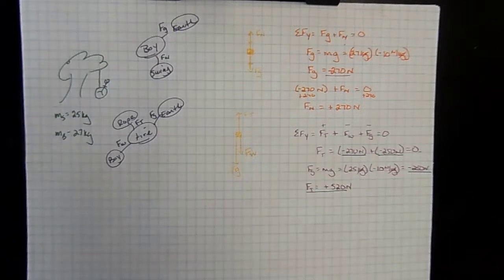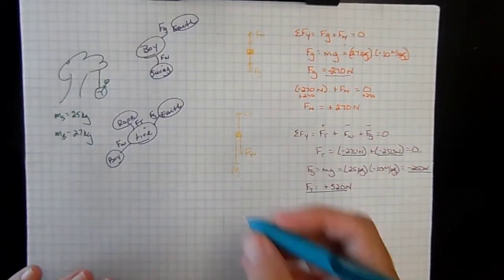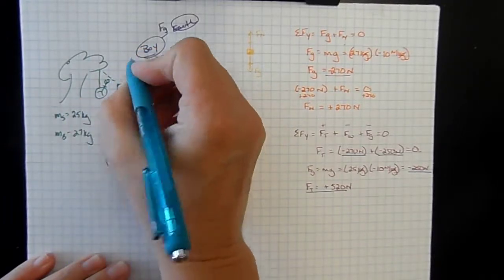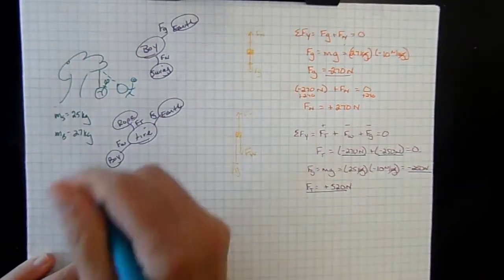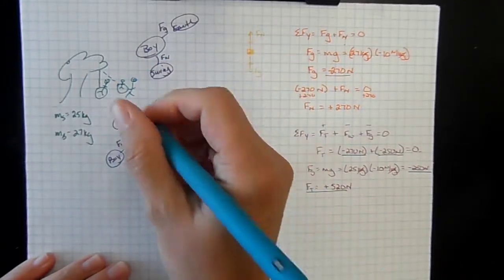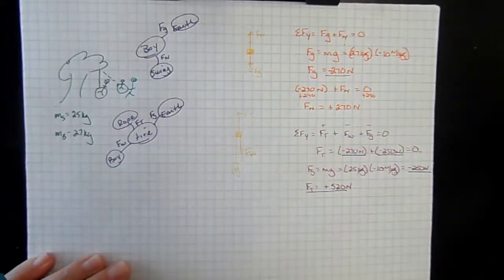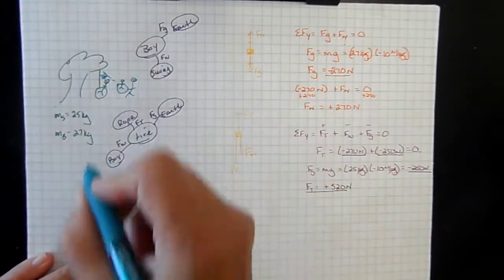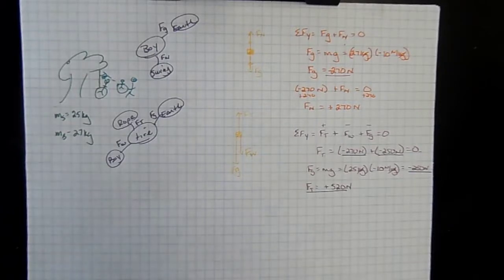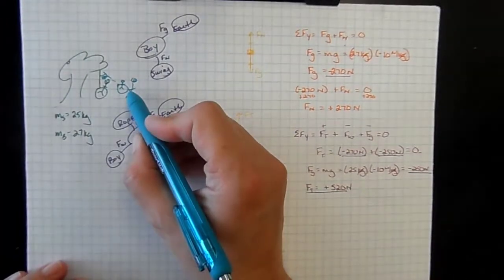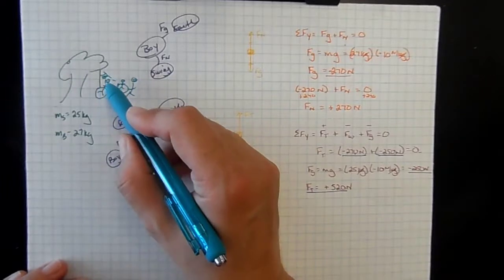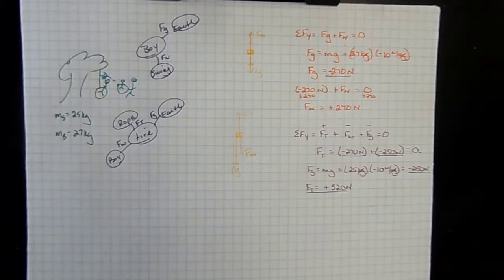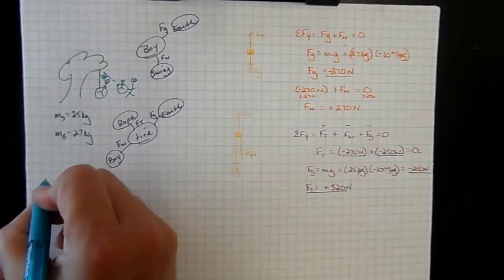Let's make it more interesting. Mom comes over and pulls the swing back while the boy is still in it. We're going to pull the swing back to an 18-degree angle. We're still at rest, so everything is still balanced, but now we've got angles. Our big question is: what is the new tension in the rope?